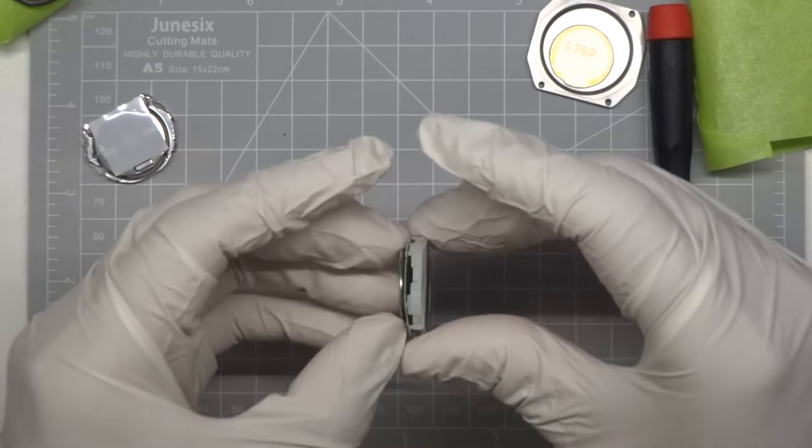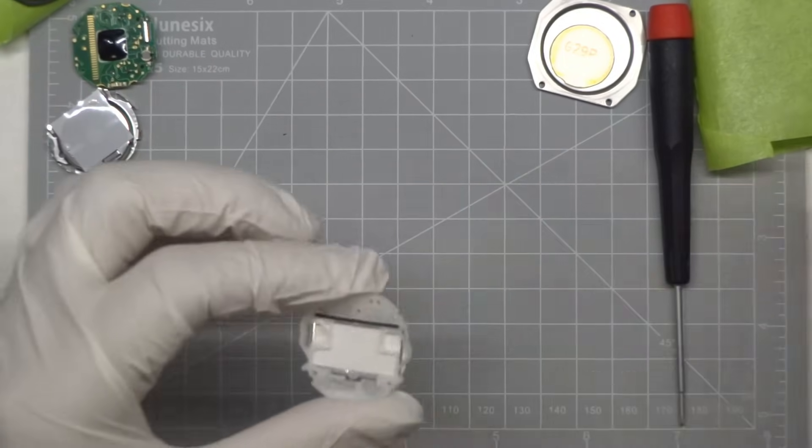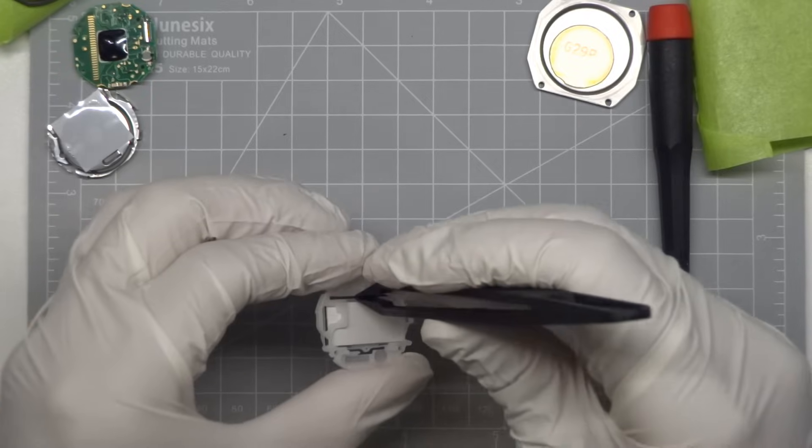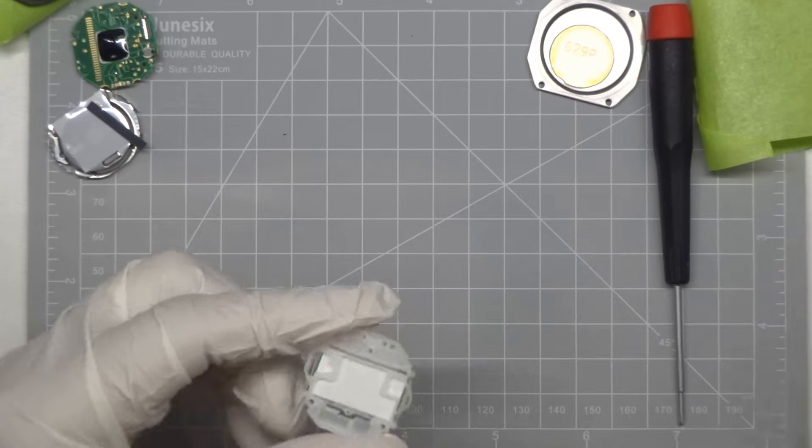Remove the PCB. Carefully remove the zebra strip. Take care because this black and white striped conductive rubber strip is easily damaged or contaminated.